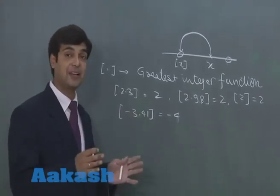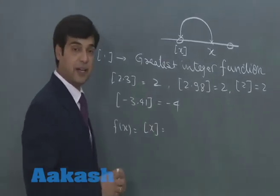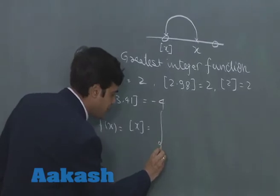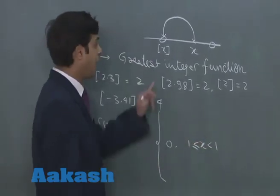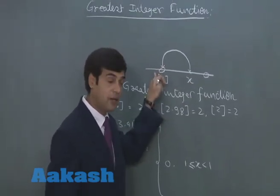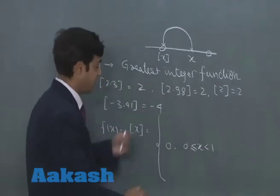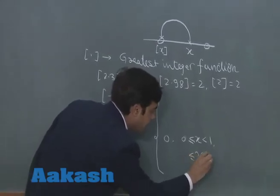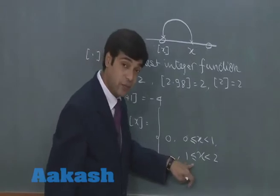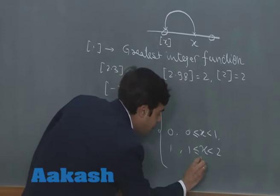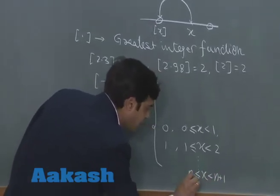Let's summarize the function now. If f(x) equals greatest integer of x, we can redefine it across different intervals. It will be 0 whenever x lies between 0 and 1. If x lies between 1 and 2, the greatest integer value becomes 1 — the equal sign is included at x=1 because when x equals 1, the greatest integer is 1. Continuing the pattern: if x lies between n and n+1, it will simply be n.